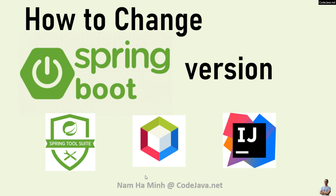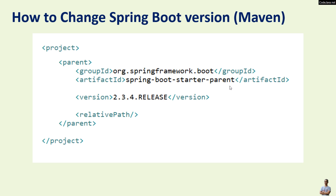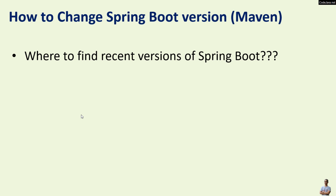In this video I'd like to share with you how to change the Spring Boot version of a Maven based project. I am Nam Ha Min from CodeJava.net. It's very simple to change the version of Spring Boot in a Maven project — just change the version of the Spring Boot starter parent in the POM XML file.